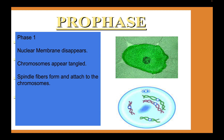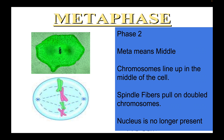During metaphase, the chromosomes are going to be lined up in the middle of the cell. As shown in the bottom diagram, each chromosome is double-stranded, and each strand is identical to the other — they carry the same genetic material. At this point, the nucleus is no longer present, and the spindle fibers will start to pull on the double chromosomes.